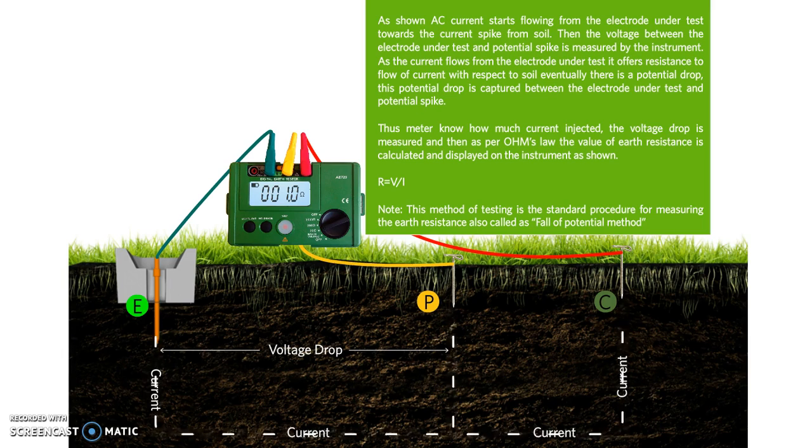Eventually there is a potential drop captured between the electrode under test and the potential spike. Thus the meter knows the value of current and also the value of potential difference.